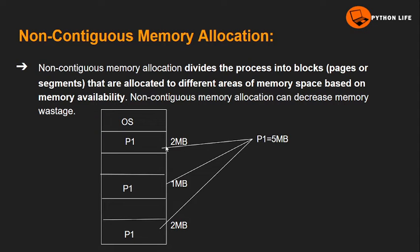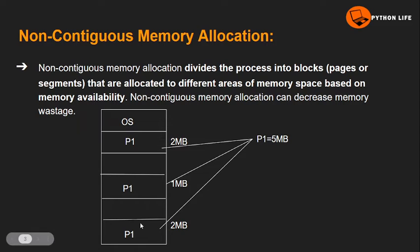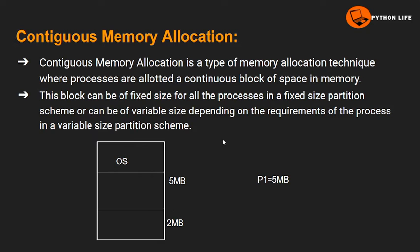These blocks are allocated to different areas of memory space based on memory availability. For example, the P1 process of 5MB can be split — 2MB stored in one area and 3MB in another area — and the total 5MB process is stored. This is called non-contiguous memory allocation.